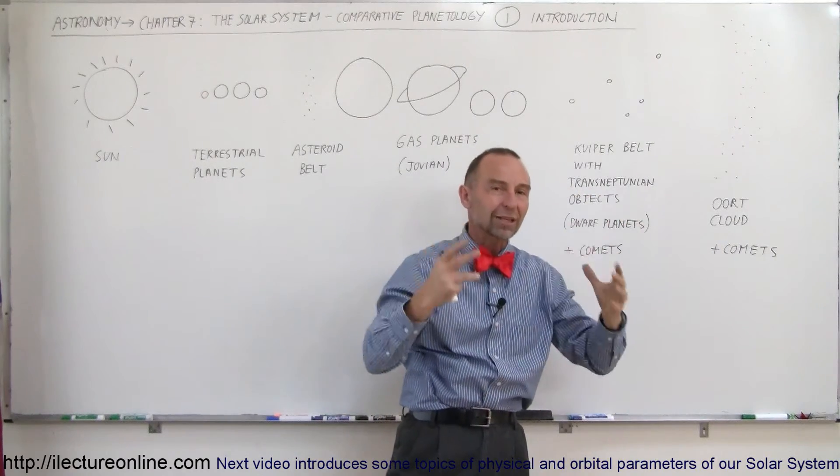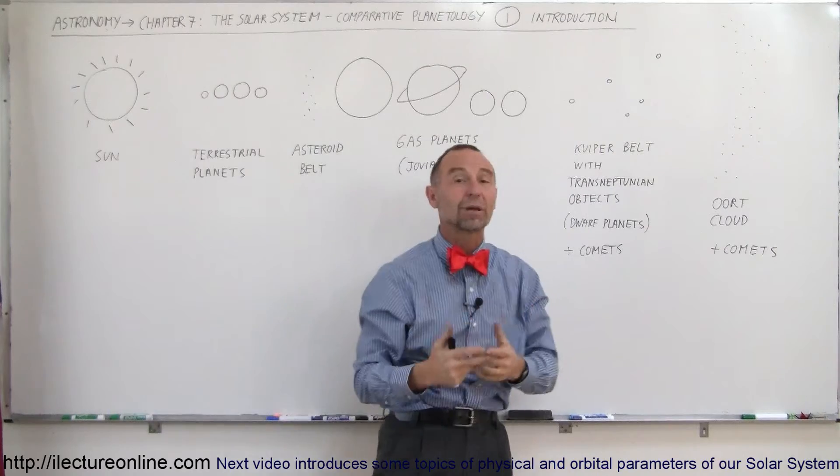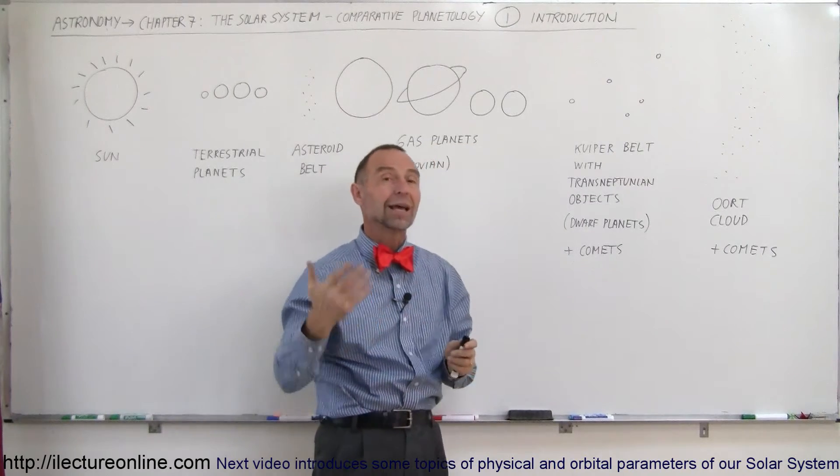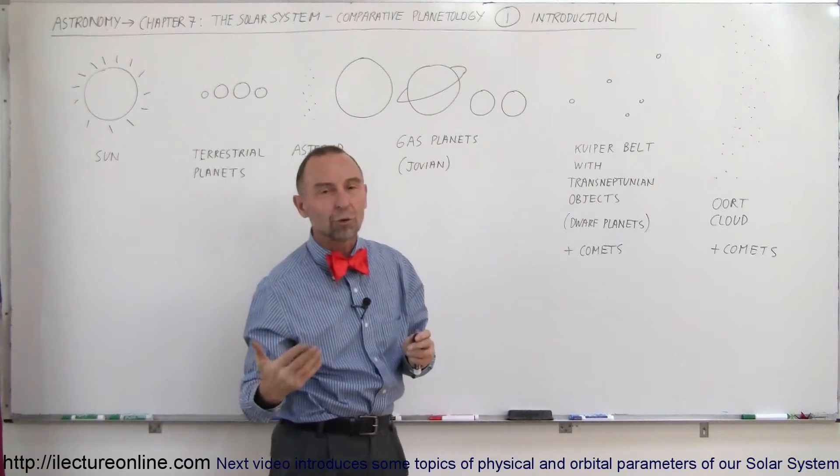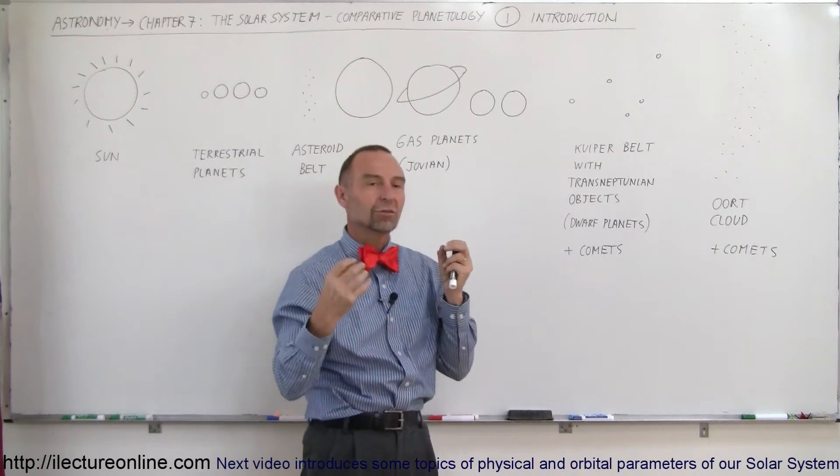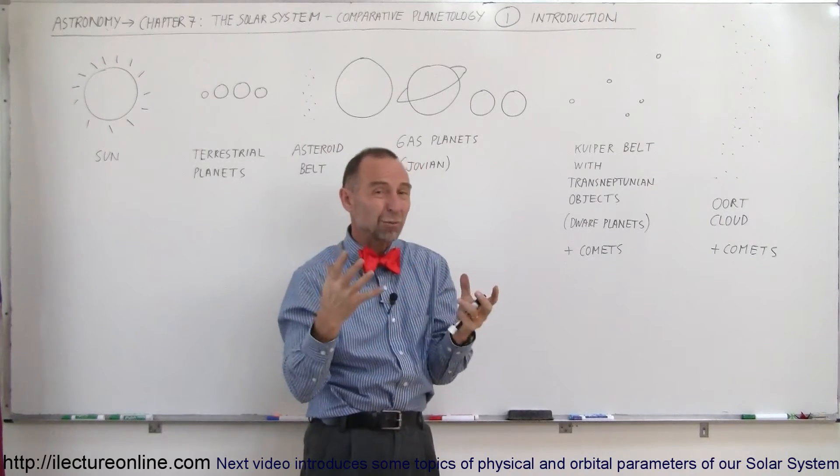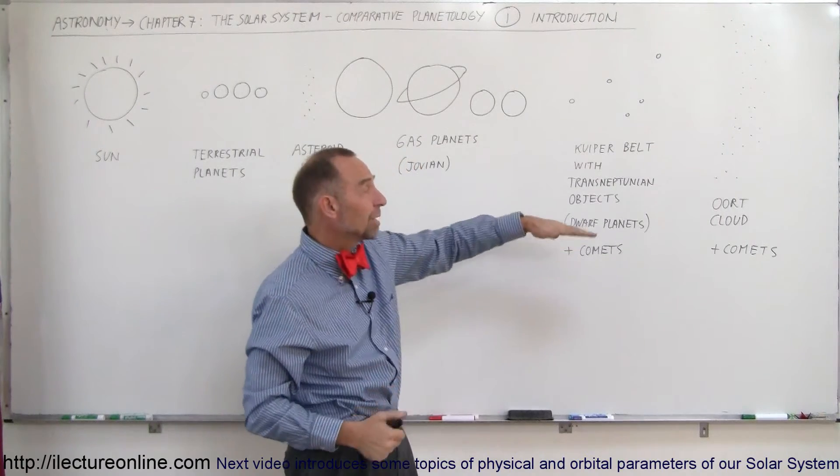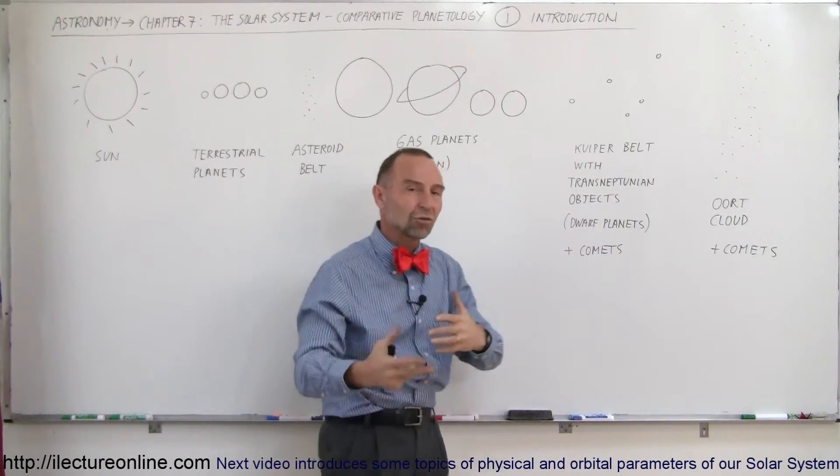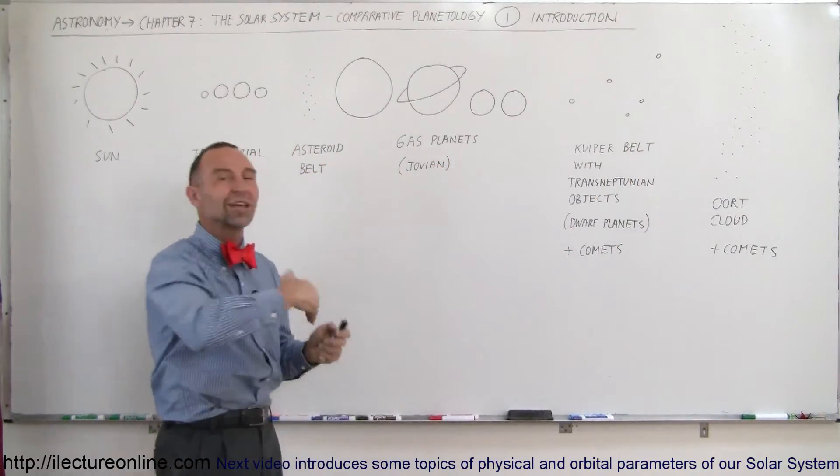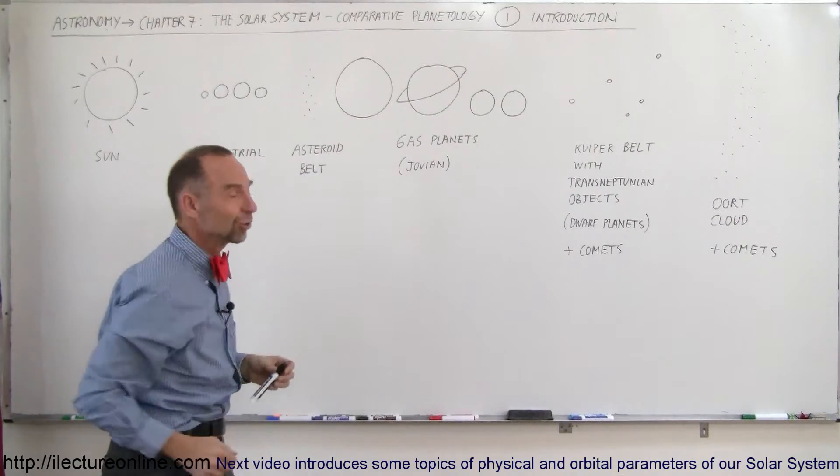but we also have a spherical-shaped region that goes out for as much as a whole light year away from the Sun that's filled with billions and billions of remnants of the formation of the solar system, primarily ices and frozen gases way out there in the shape of small rocks and big rocks and maybe large enough to be comets that then sometimes come streaking into the inner solar system.